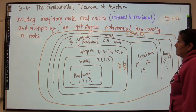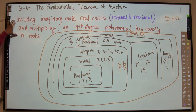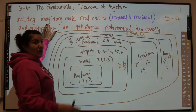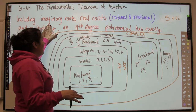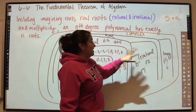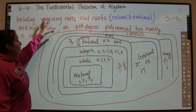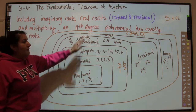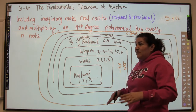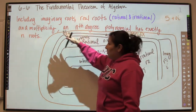What really matters is not so much the Fundamental Theorem itself, but the corollary it gives us, which I have written up here in red. Including imaginary roots, real roots — both rational and irrational — and multiplicity, when you recall that multiplicity is when you have the same zero more than once, an nth degree polynomial has exactly n roots. In other words, a polynomial with x to the fifth will have five roots, x to the seventh will have seven roots, and x to the 100th will have 100 roots.